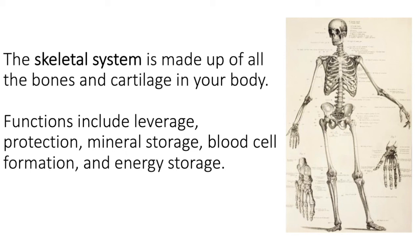Inside the shaft of long bones there's another kind of marrow called yellow bone marrow, which is a high-caloric fat substance that we can use as energy if we are in a state of starvation. Now let's proceed through these pages and talk about bone tissue: the cells, bone formation, compact versus spongy bone, and the typical anatomy of a long bone.